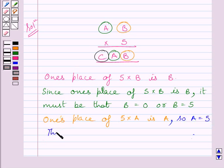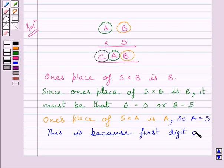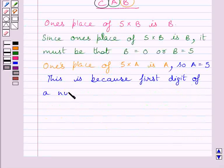This is because, first digit of a number, AB cannot be 0.